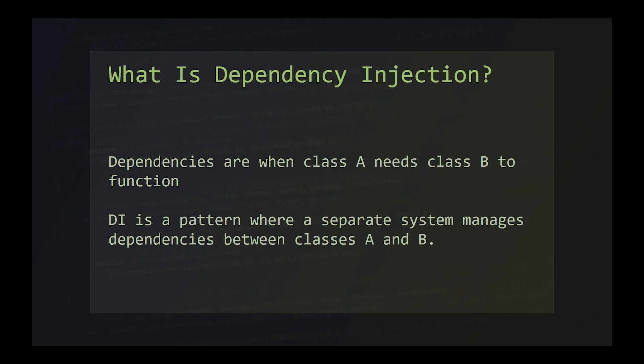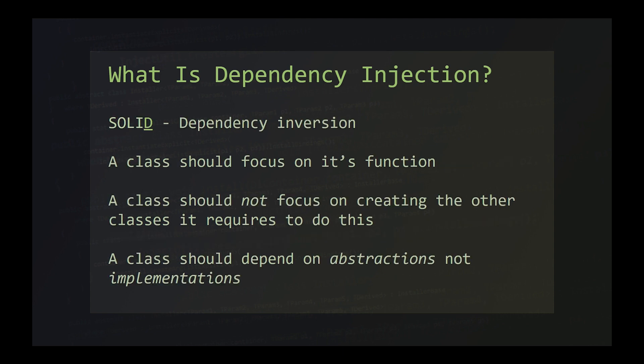Dependency injection is a pattern where a separate module or framework is used to manage all these dependencies for us. Dependency injection applies mainly to the D in the SOLID design principles, dependency inversion, although it helps us in other areas too. Classes or modules in our project should focus only on their own function, which also feeds into separation of concerns. Our classes should not focus on the creation and configuration of classes they depend on.